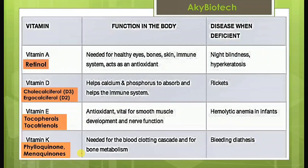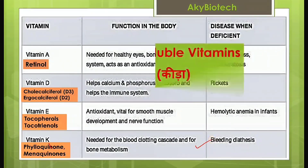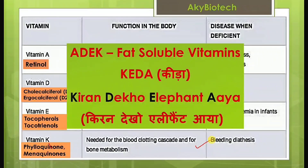Vitamin K — another name for it is phylloquinone or menaquinones. Its function in the body is that it is needed for the blood clotting cascade and for bone metabolism. Deficiency of vitamin K leads to bleeding disorders.